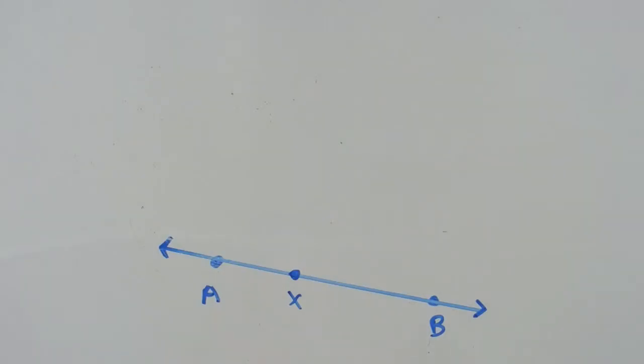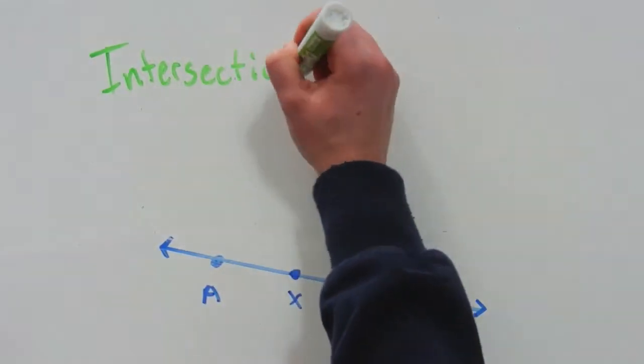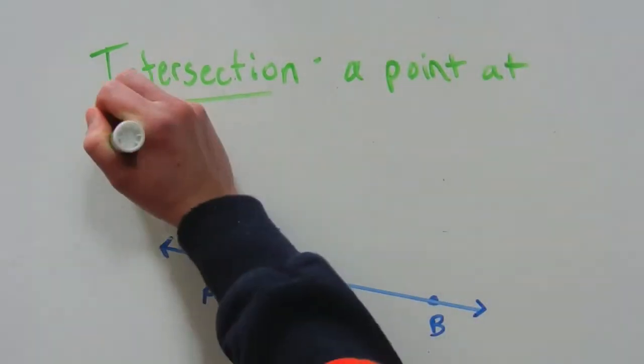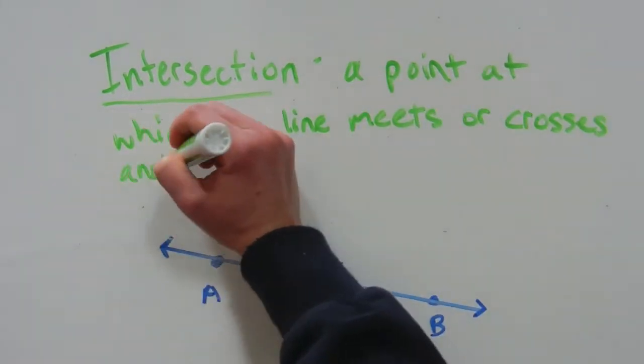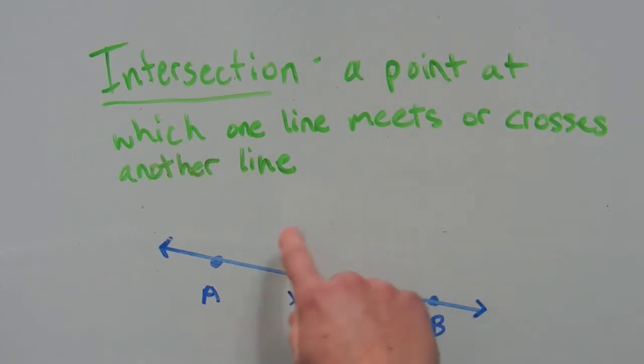Before we jump into the next postulate, I want to go over the definition of intersection. An intersection is a point at which one line meets or crosses another line.